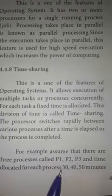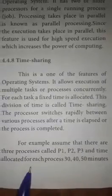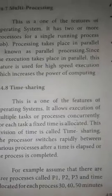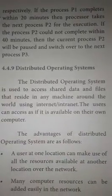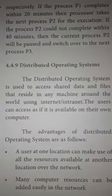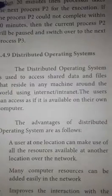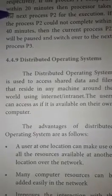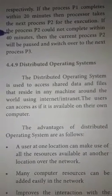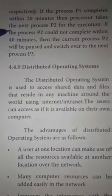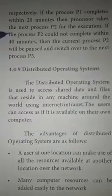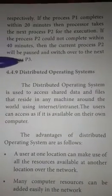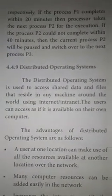For example, assume there are three processes P1, P2, and P3, with time allocated as 30, 40, and 50 minutes respectively. If process P1 completes within 20 minutes — before its 30-minute allocation — it passes to the next process P2. If P2 does not complete within 40 minutes, it is passed over to the next process P3. This is known as time sharing.